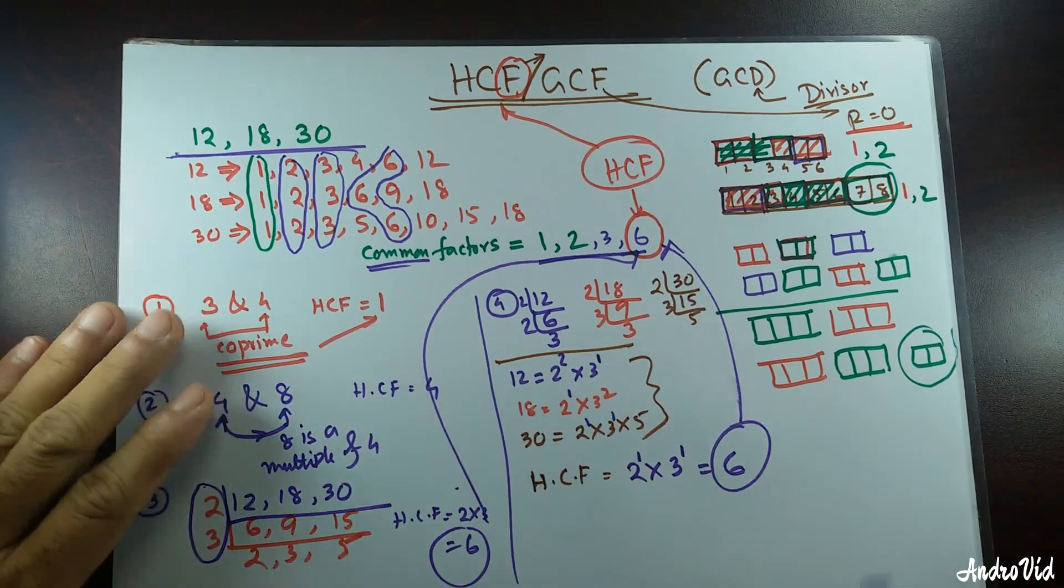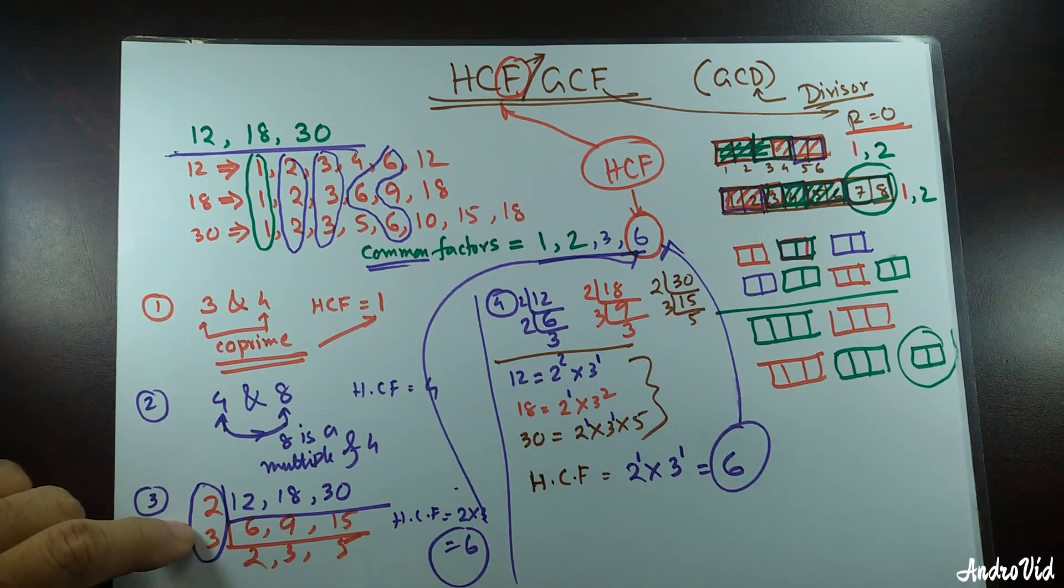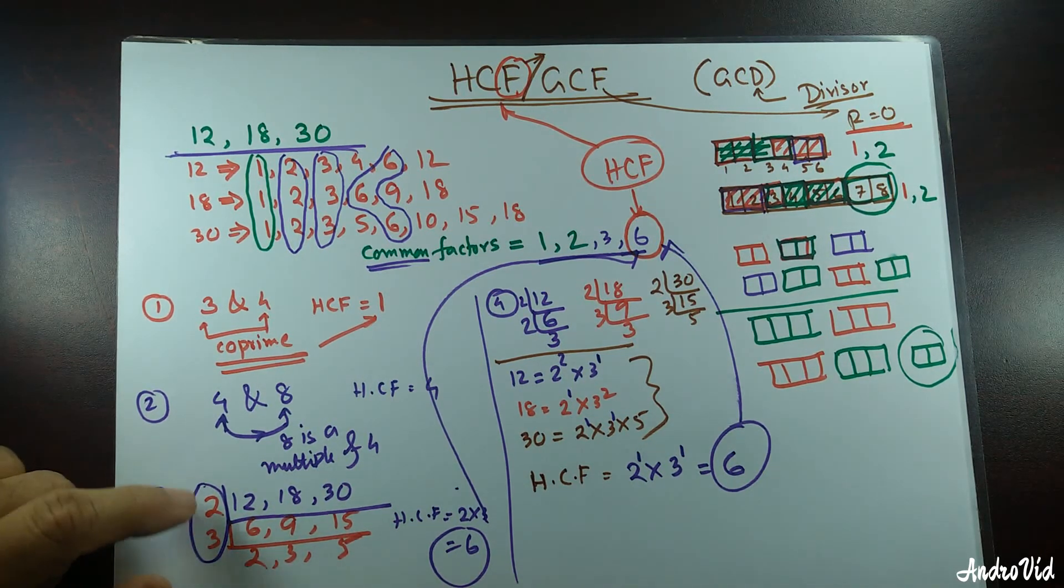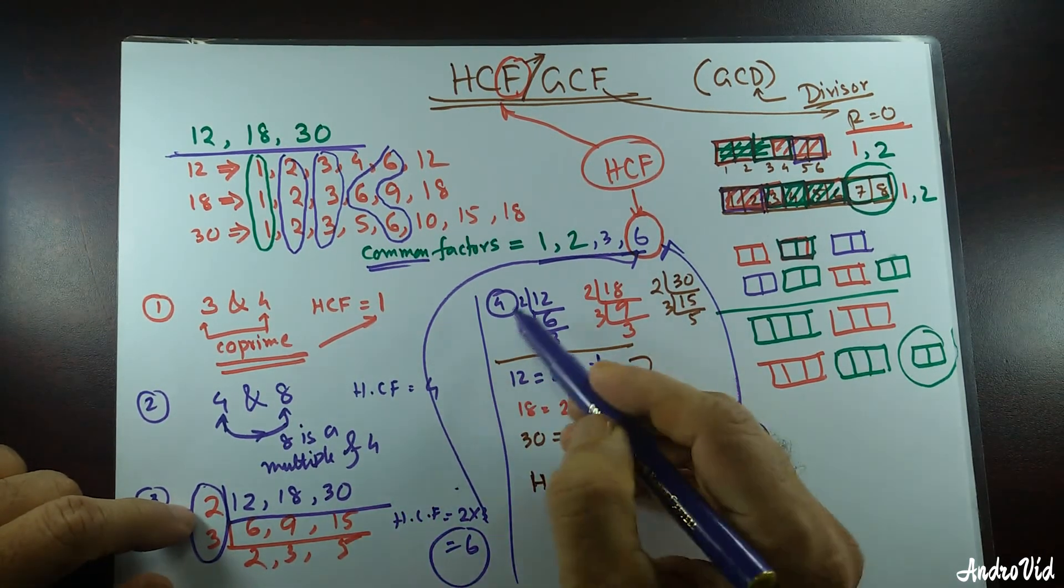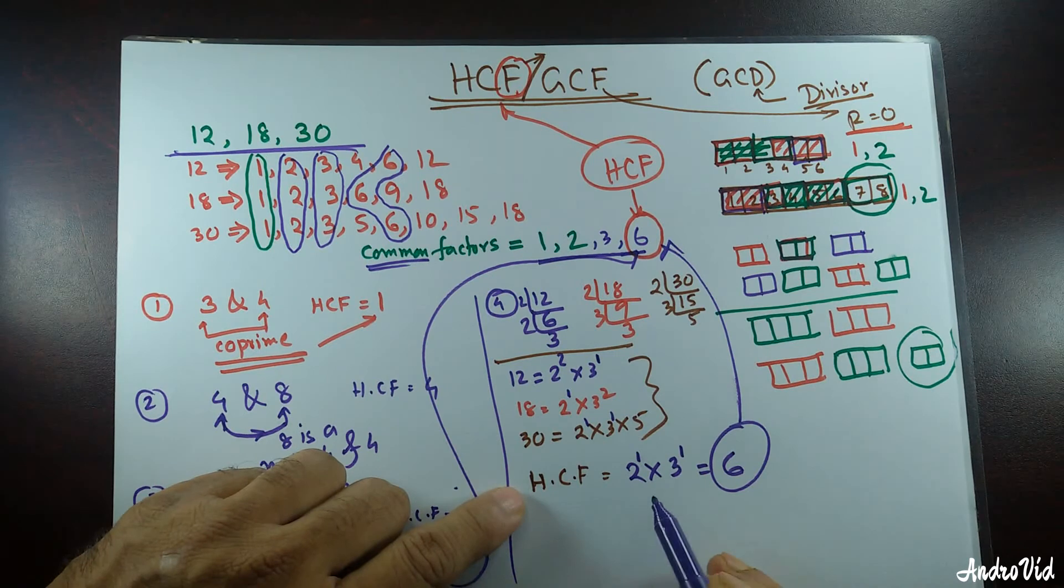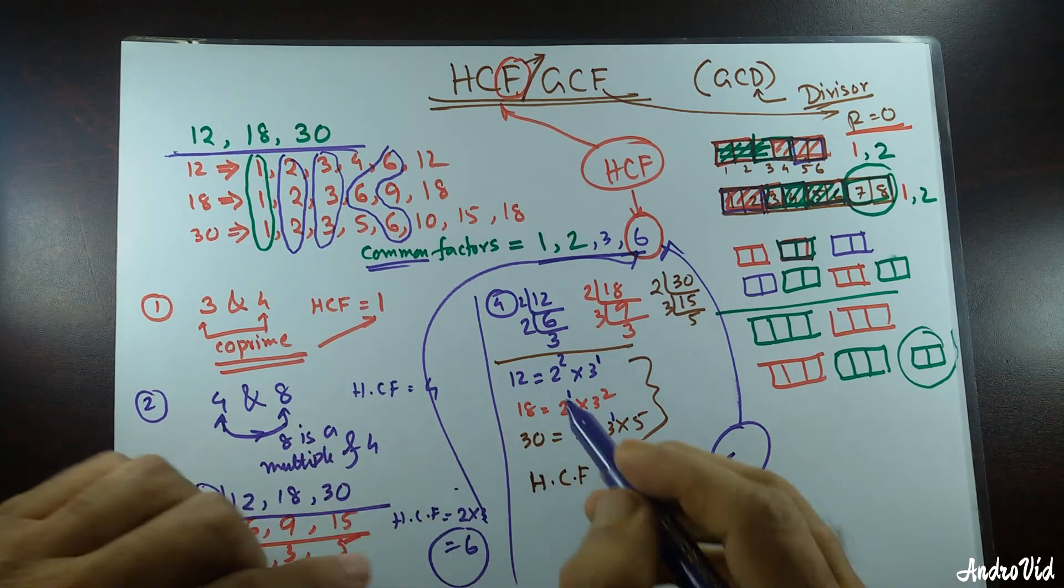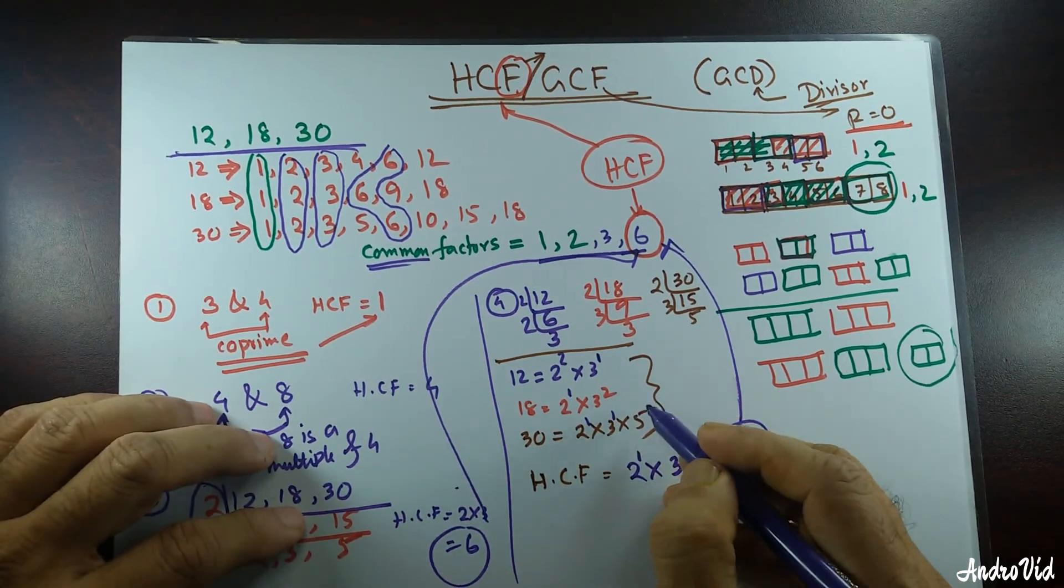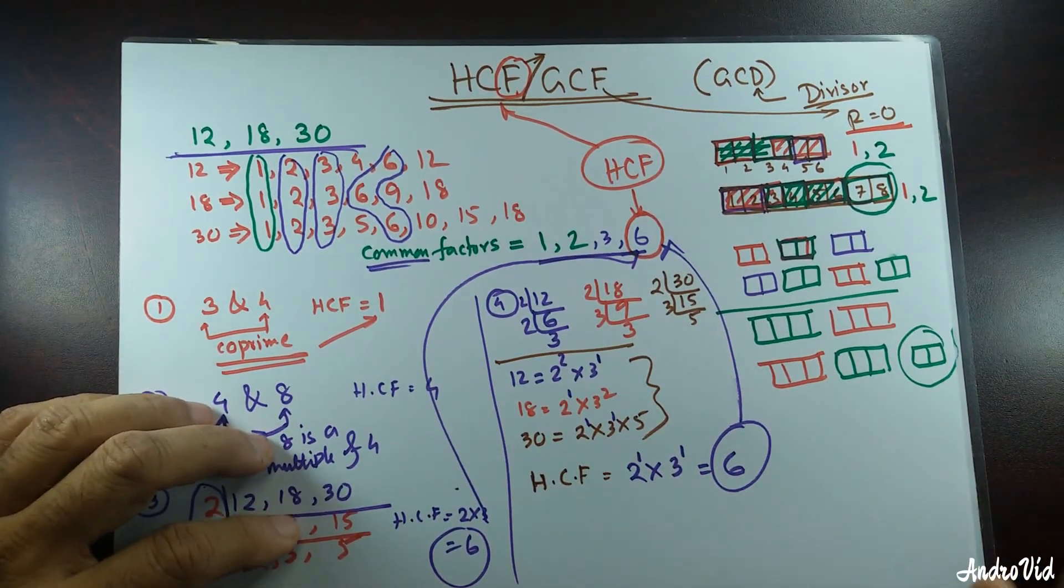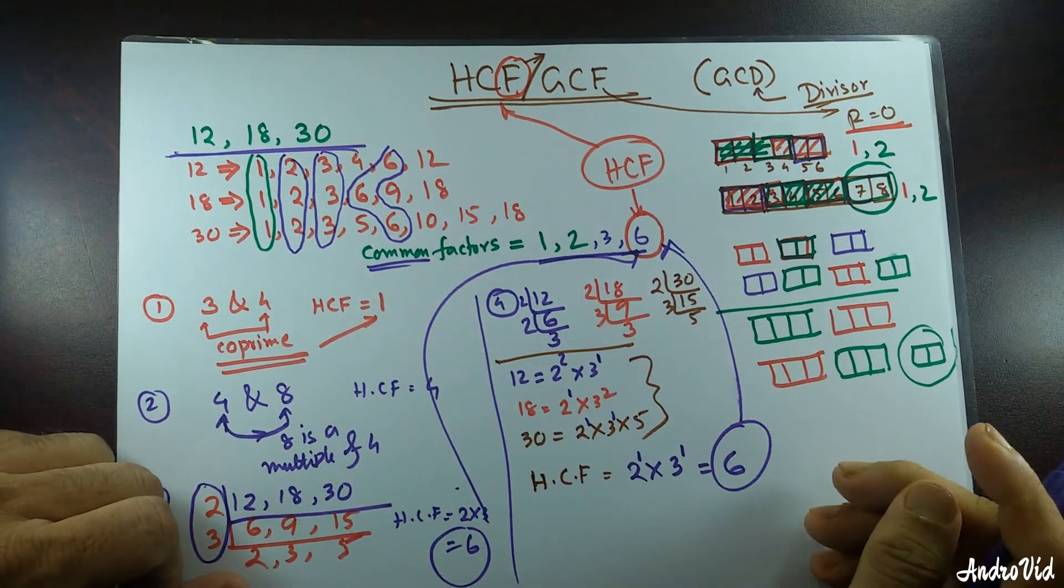This is how we do the HCF. This is easier and fastest way to find out the HCF. If you don't understand, please rewind the video and check that. This is prime factorization. We are going to find out the HCF taking the common factors with the lowest power. This is very interesting and efficient method whenever we are dealing with algebraic HCF. See you in the next video explaining LCM. Thank you very much. Have a good day.